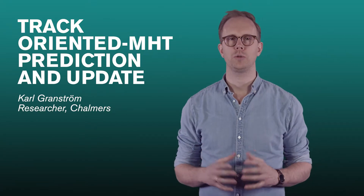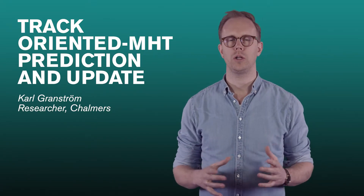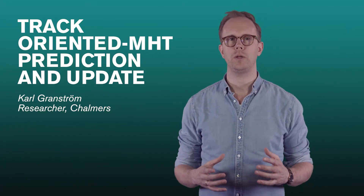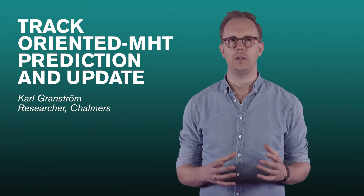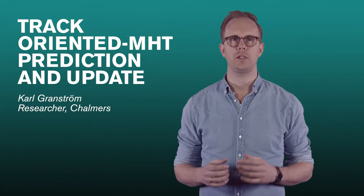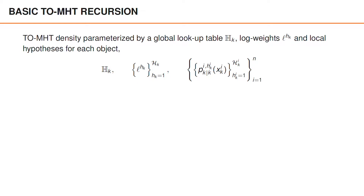In this video we're going to learn how the local hypotheses and the global lookup table can be predicted and updated in track-oriented MHT. In track-oriented MHT, the density is parametrized by a global lookup table, the log weights for the different global hypotheses, and local hypotheses for each object.